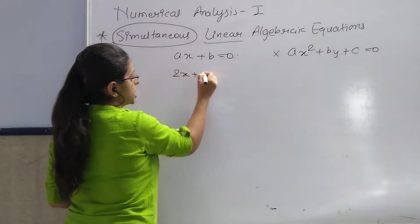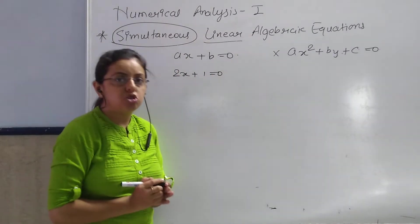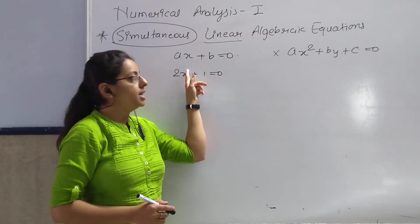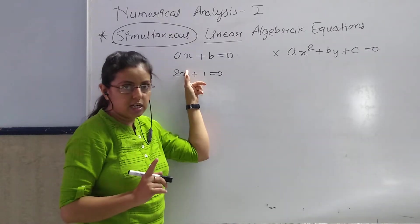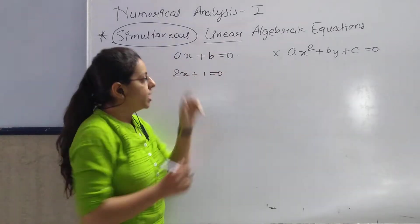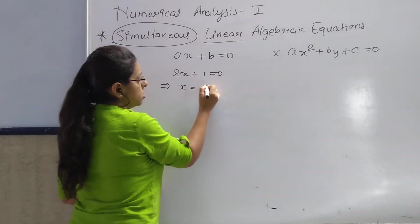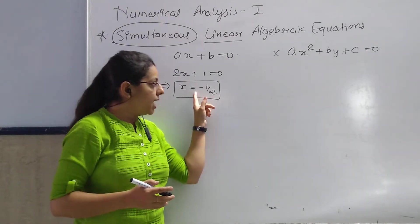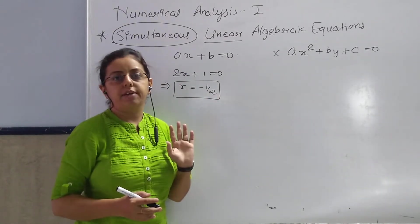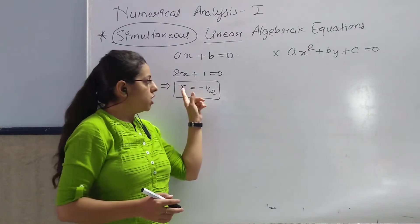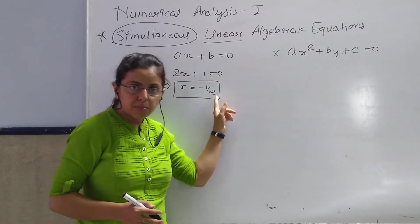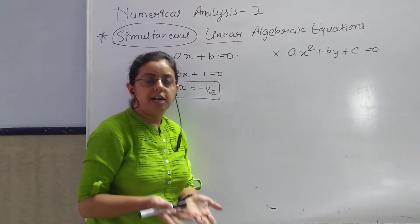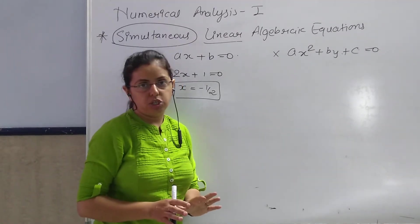For example, our equation is 2x plus 1 equals to 0. The variable has the highest power of 1. So we find x equal to minus 1 by 2. So x = −1/2 is said to be the solution of the equation, or it is said to be the root of the equation.